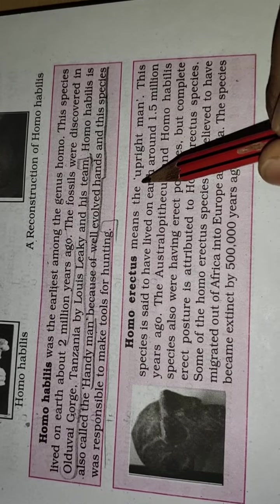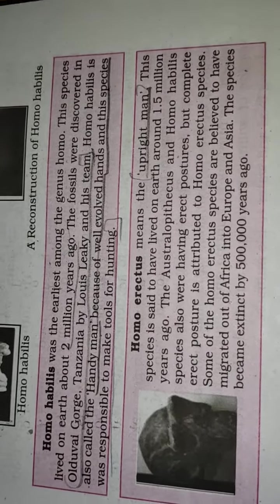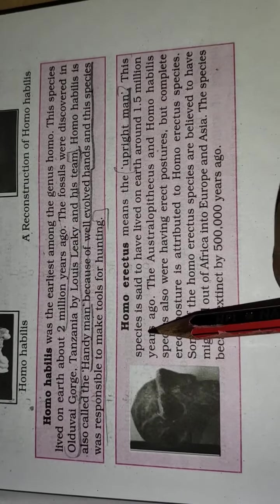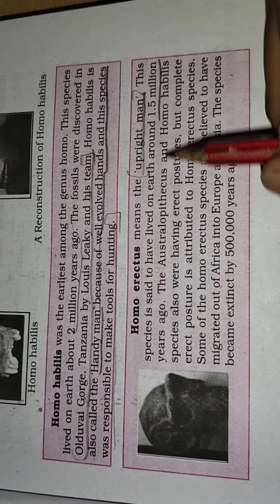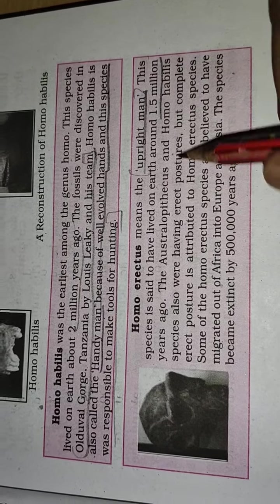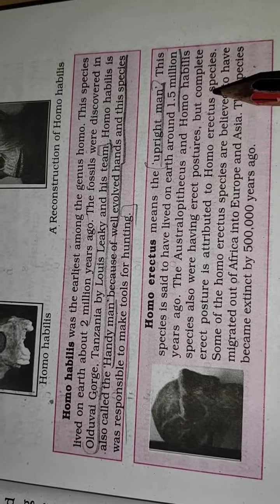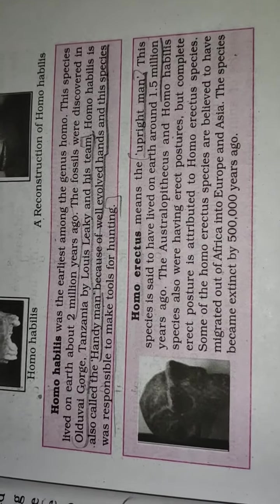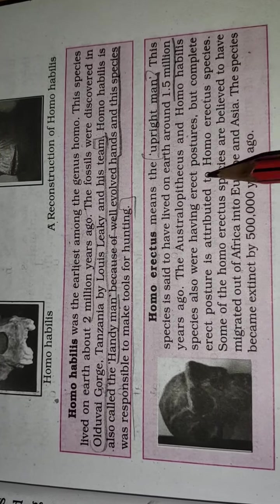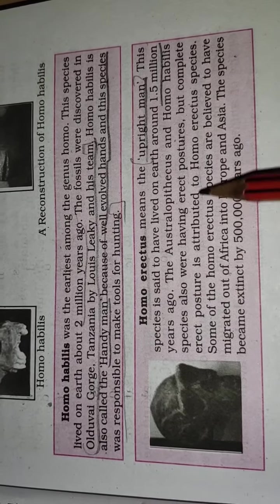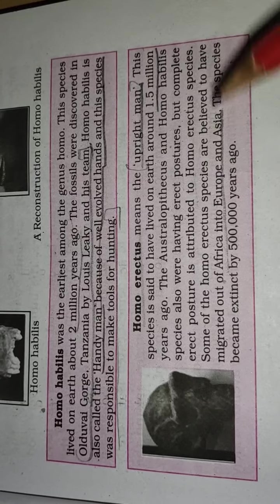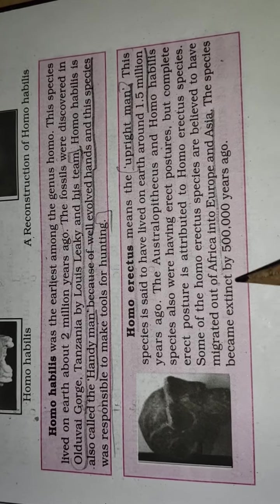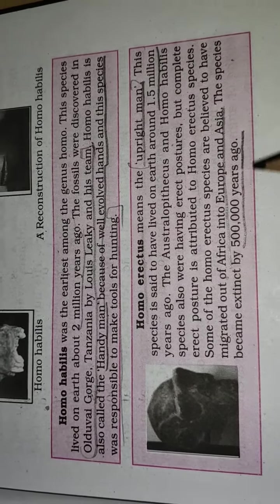Homo erectus means 'upright man.' This species is said to have lived on Earth around 1.5 million years ago. Australopithecus and Homo habilis also had erect postures, but complete erect posture is attributed to Homo erectus. Some Homo erectus species are believed to have migrated out of Africa into Europe and Asia. The species became extinct by about 500,000 years ago.